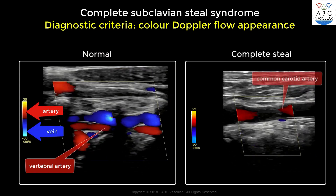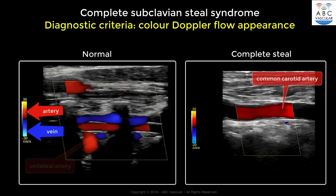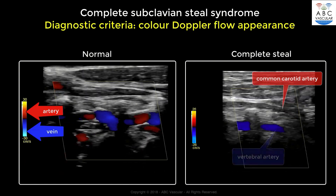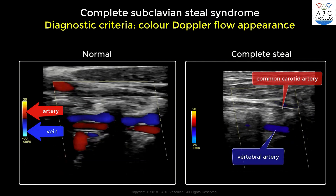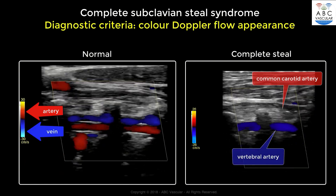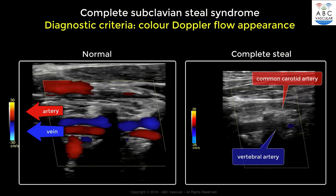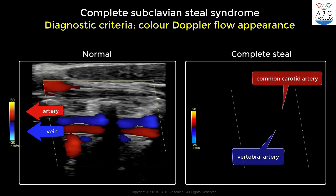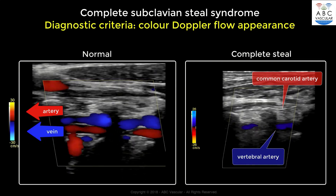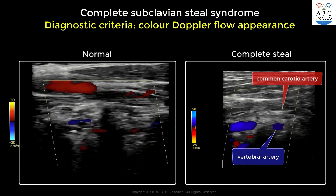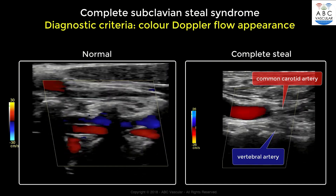In the presence of a complete steal, while the common carotid artery will appear in red, the vertebral artery will appear in blue, thereby indicating the different direction of the flow through the vertebral artery compared to the ipsilateral common carotid artery.